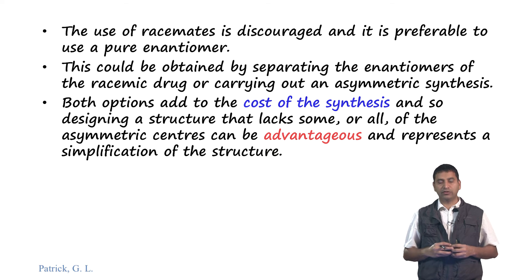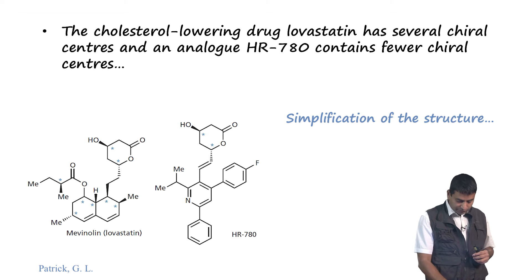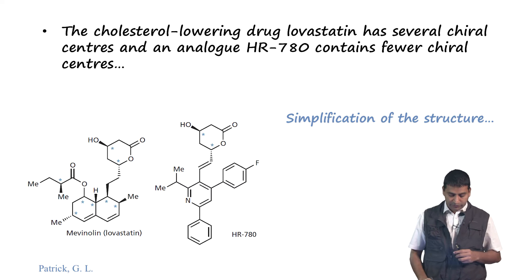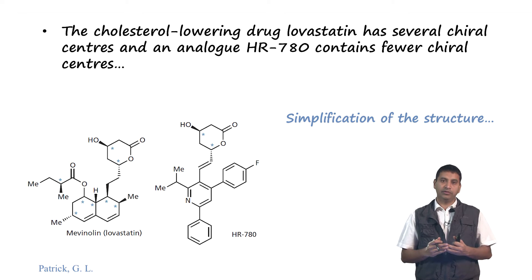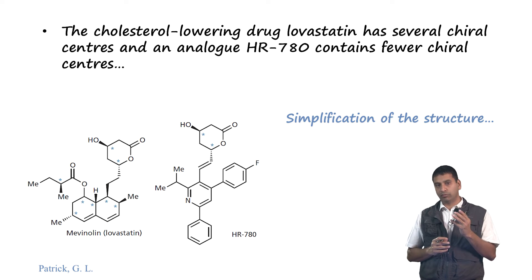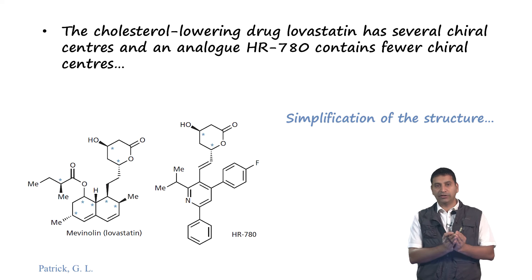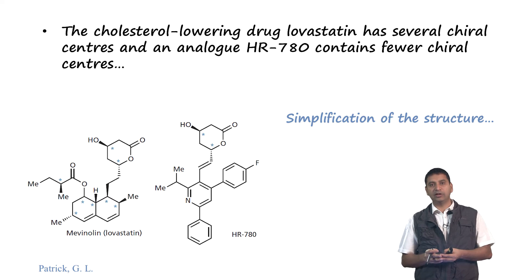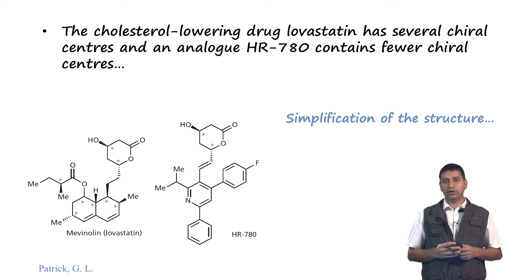Therefore, designing a structure that lacks some or all asymmetric centres can be hugely advantageous and is an important part of simplification. The cholesterol-lowering drug lovastatin has several chiral centres - you can count 8 in total. During structure-activity relationship studies using simplification, we have substantially lowered the number of chiral centres from 8 down to 2, and this simplified molecule has pretty much the same activity as the parent compound. It is therefore highly desirable to use this analogue going forward as a drug compared to lovastatin.